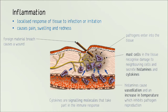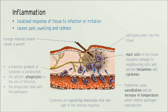Cytokines are signalling molecules involved in the immune response. A chemical gradient of cytokines is established from the site of infection, spreading through blood vessels. White blood cells called phagocytes detect this gradient and migrate from low to high concentration — towards the site of infection — where they deal with the pathogens. The two key chemicals in inflammation are histamines and cytokines.